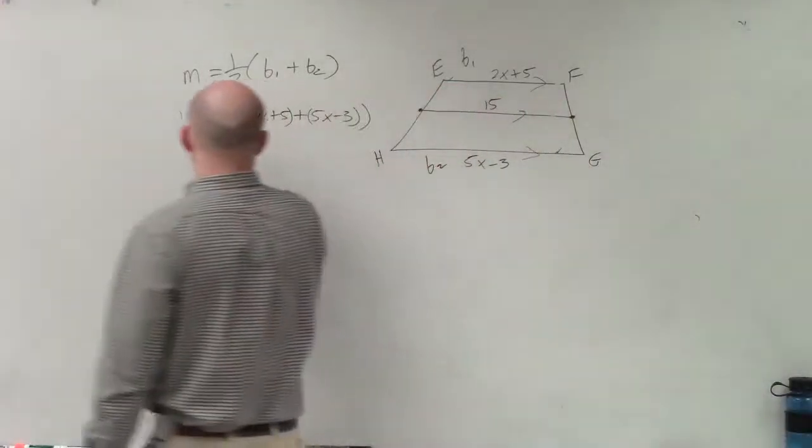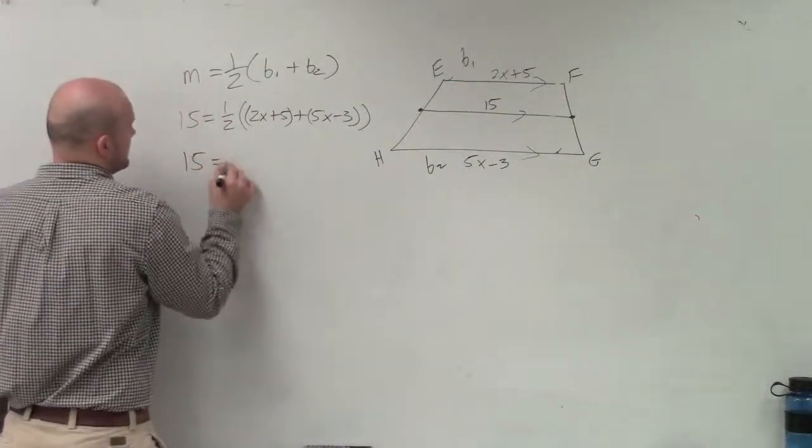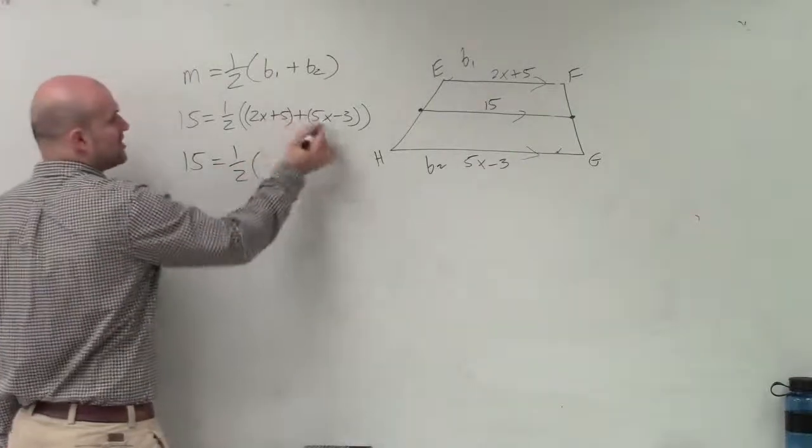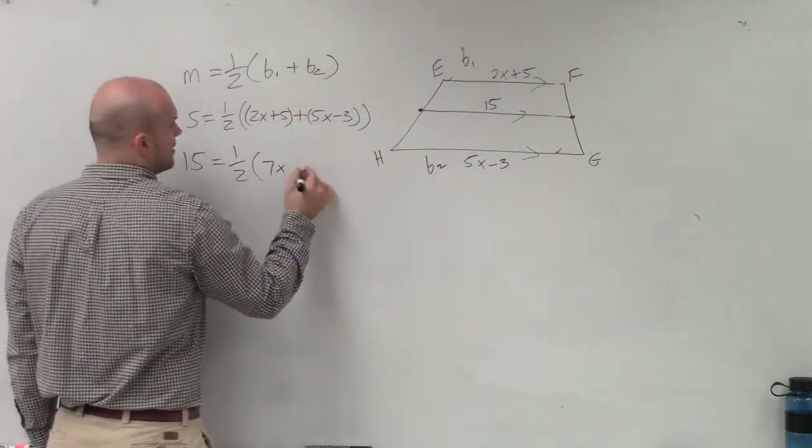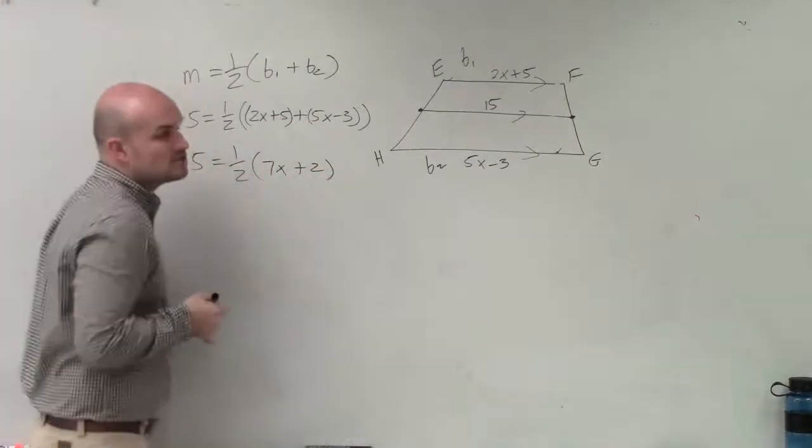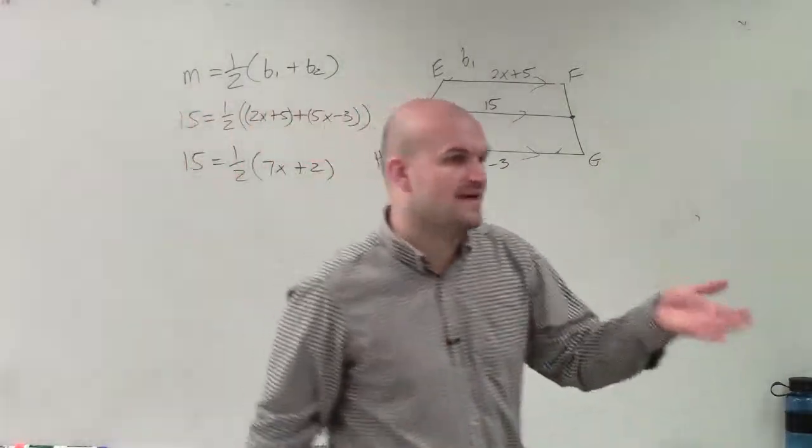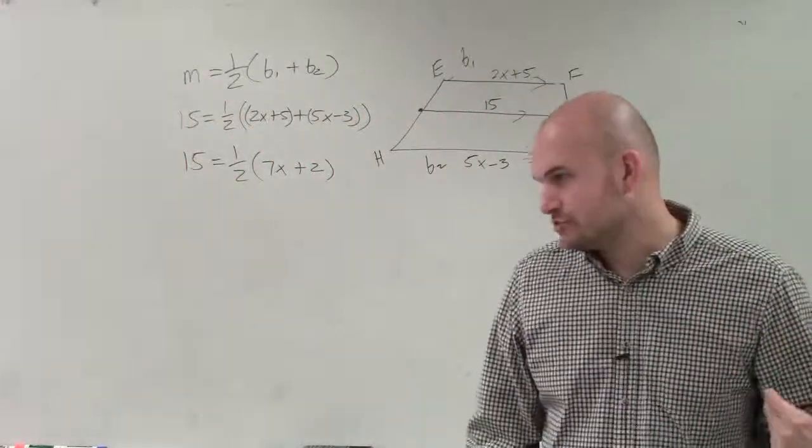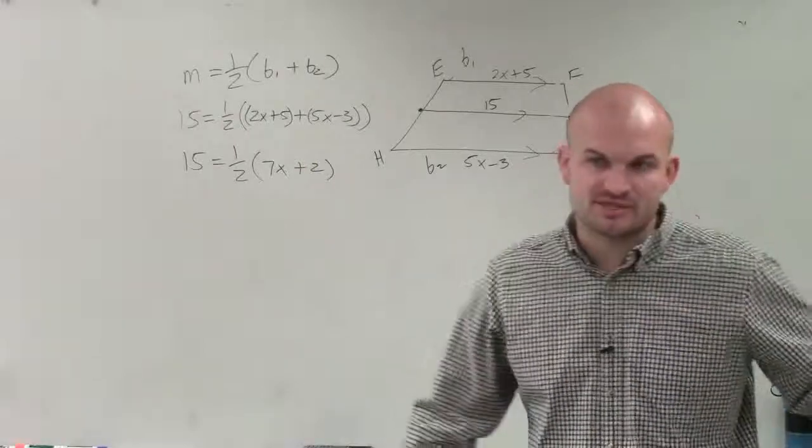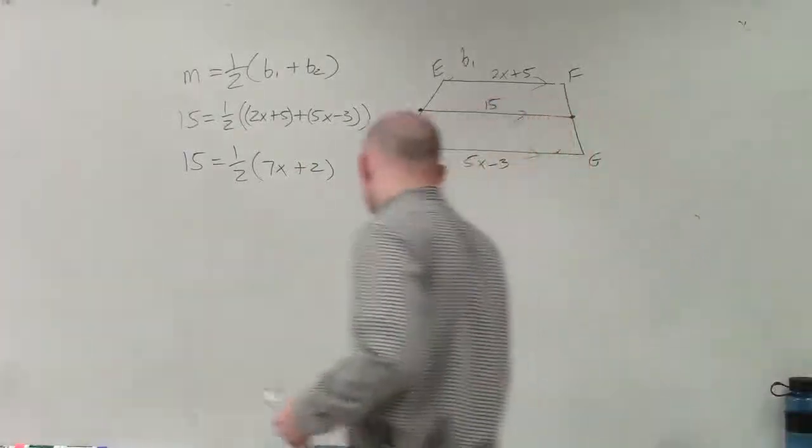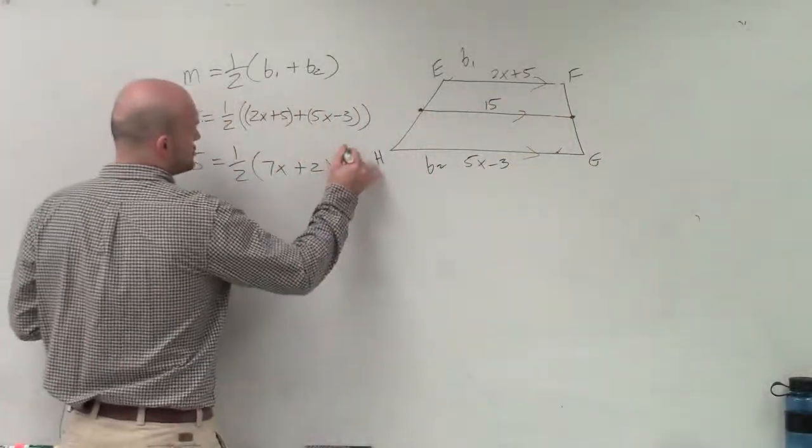So now I can combine like terms. So I say 15 equals 1 half, 2x plus 5x is 7x plus 2. Now, to solve for this, you can distribute the 1 half if you'd like to. I don't like distributing the 1 half. I like to multiply by the reciprocal on both sides. So I'll multiply by 2 over 1.